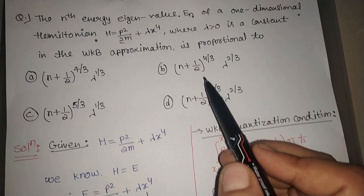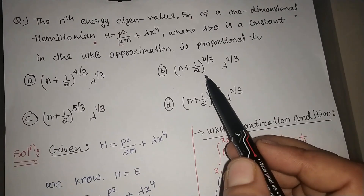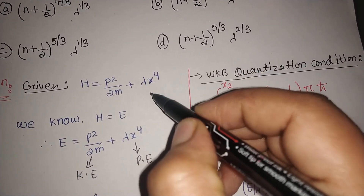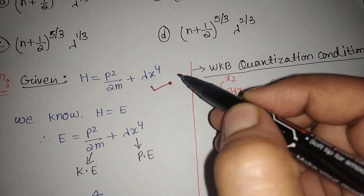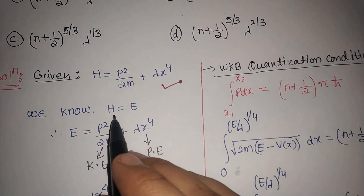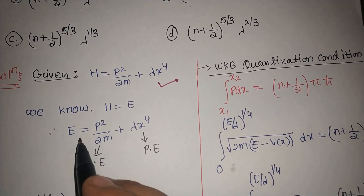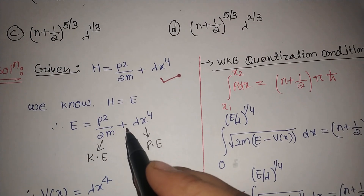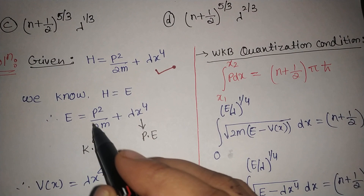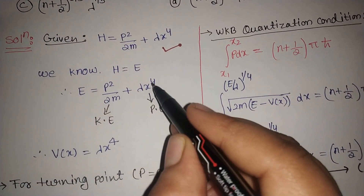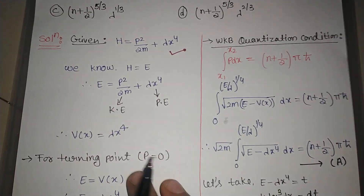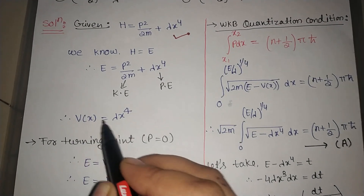First we write the given information. We have the Hamiltonian H, and we know that the Hamiltonian equals the total energy, so H = E. Therefore E = p²/2m + λx⁴. Here p²/2m is the kinetic energy and λx⁴ is the potential energy.